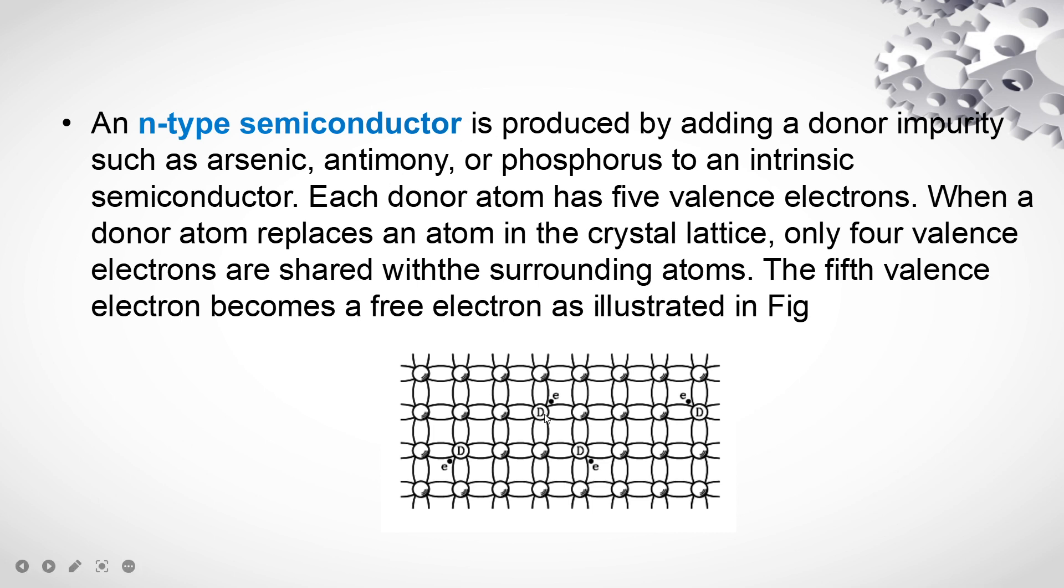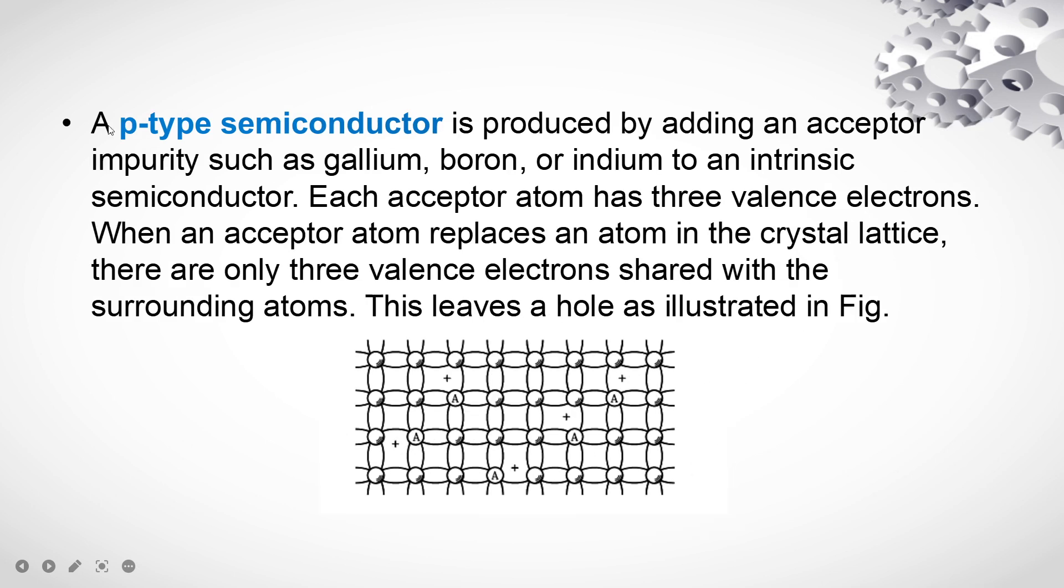In N type you can see that there are donor atoms which are having extra electrons which can be donated or shared. N type semiconductor, and acceptor impurity atoms which can accept an electron or form an electron hole pair.